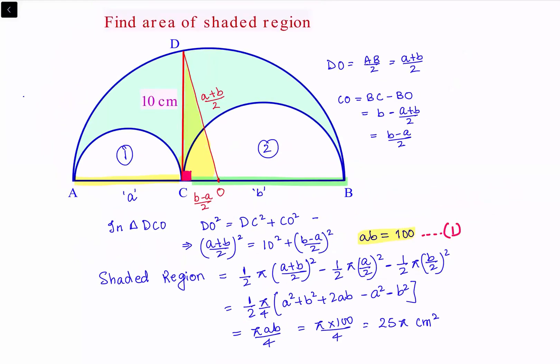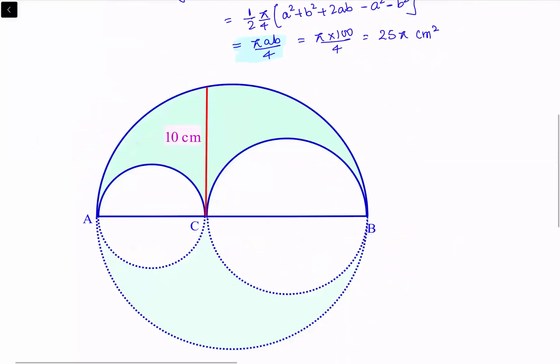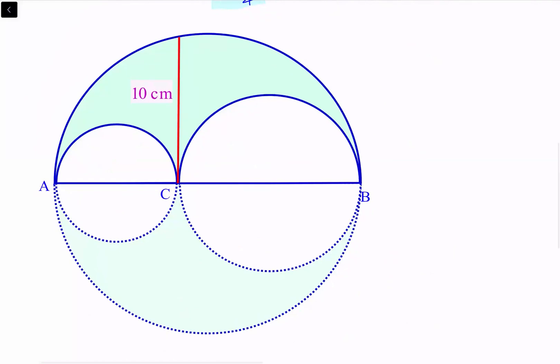Now can we do it in some other way? Yes, of course. Here we have that the area of the shaded region is π times AB by 4. We just have to find the value of A into B. In the second way, we are completing the semicircles into circles.